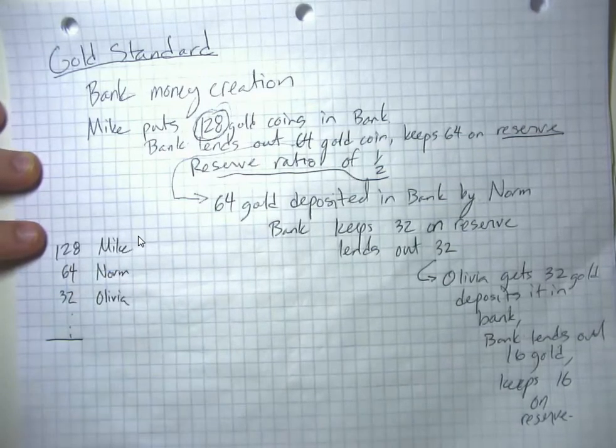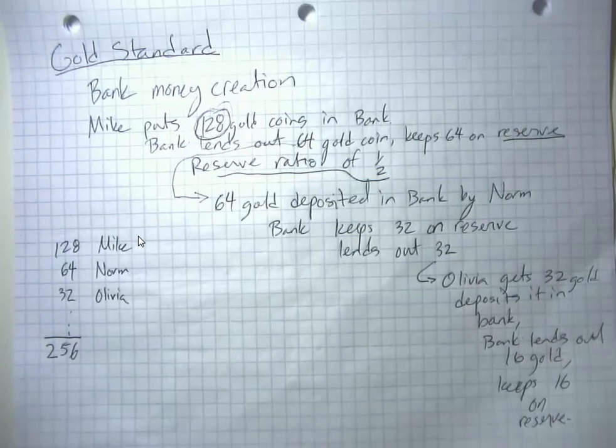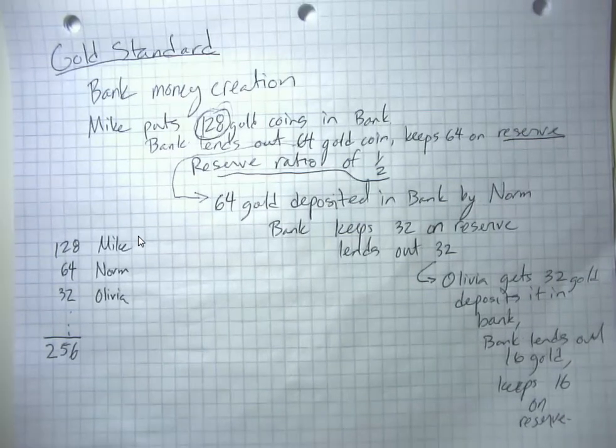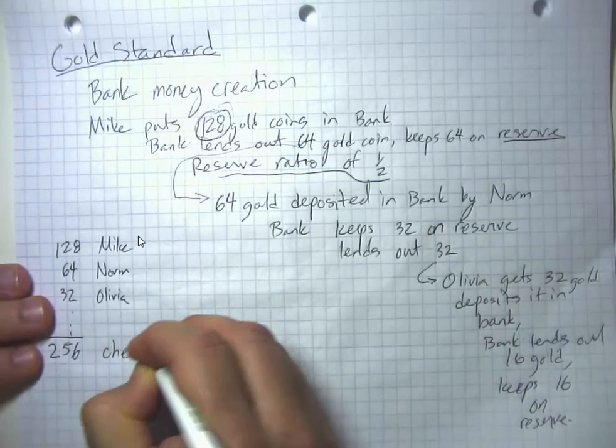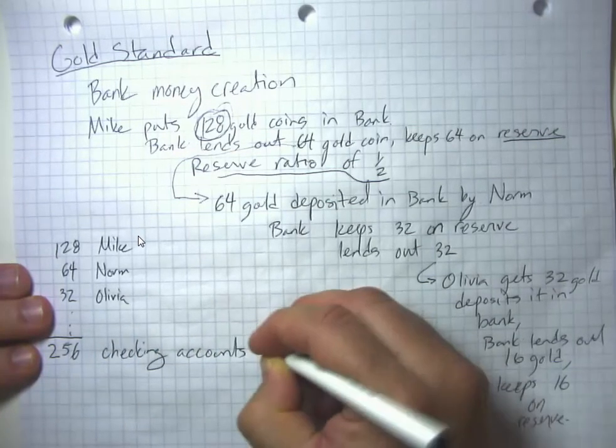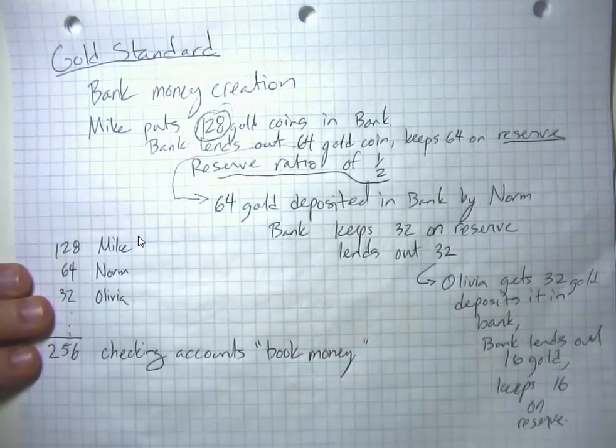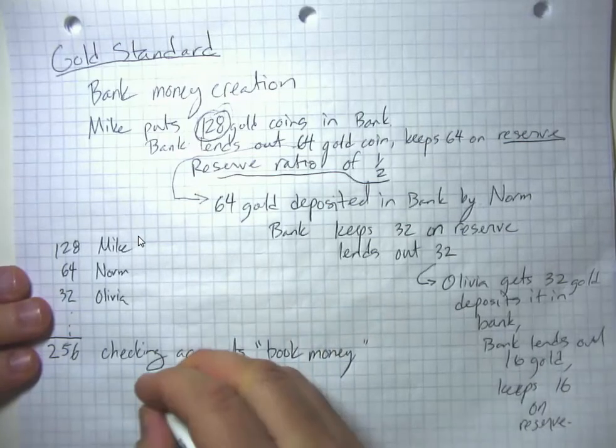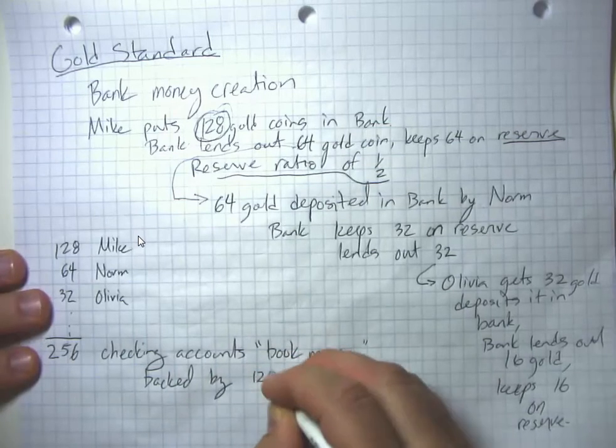If you kept this process going kind of forever and saw where it eventually all logically concluded to, we'd end up with 256. If we did 128 plus 64 plus 32 plus 16 plus 8 plus 4 plus 2 and so on, we would have 256 in people's checking accounts. This is what we call book money or bank money because it's money that exists on the books, and it is backed by 128 gold coins.